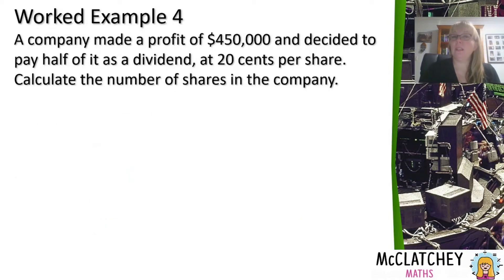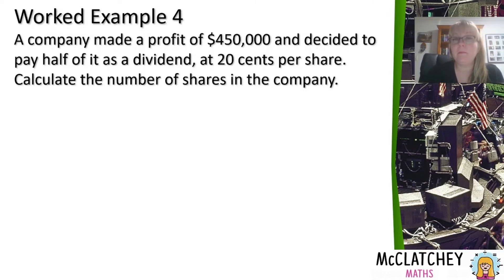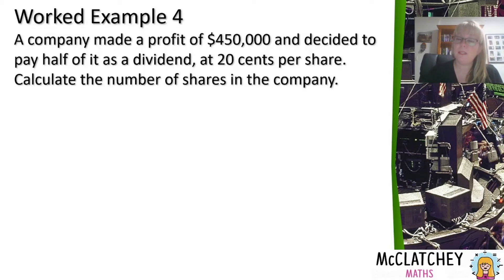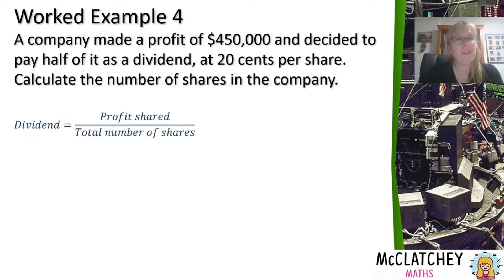In our next worked example, a company decides not to pay out all of their profits to shareholders. One reason companies do this is to reinvest some of that profit into the business so it continues to grow. If a company spent all its profits distributing to shareholders, there'd be nothing left for new ventures or increased marketing. In this case, the company made a profit of $450,000 and decided to pay half of it as a dividend at 20 cents per share. We need to use this information to calculate the number of shares in the company — working a little backwards.